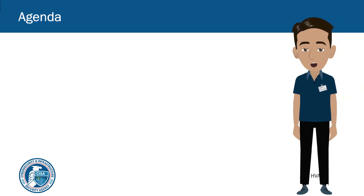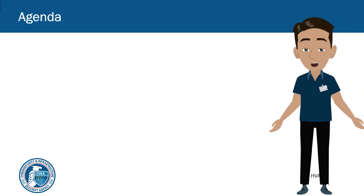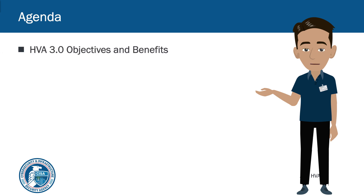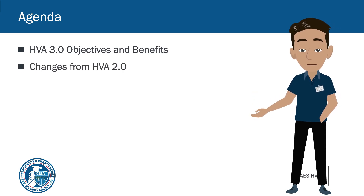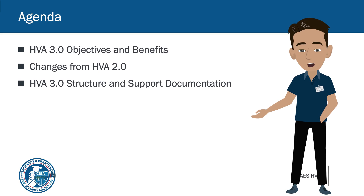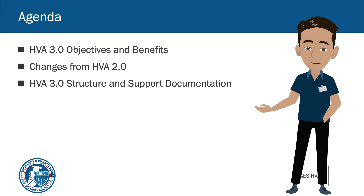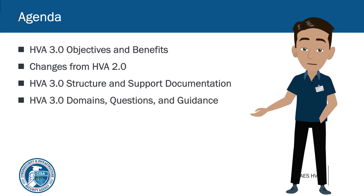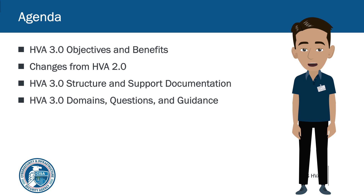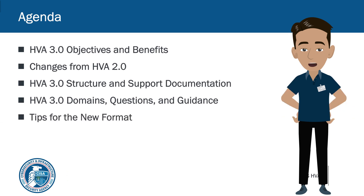In this video, we'll discuss five main topics. First, we'll review the objectives and benefits of HVA 3.0. Next, we'll look at what's changed from HVA 2.0, the updated structure and associated documentation, and the different domains, questions, and guidance. Last, we'll review some tips for assessing HVAs using the new version.